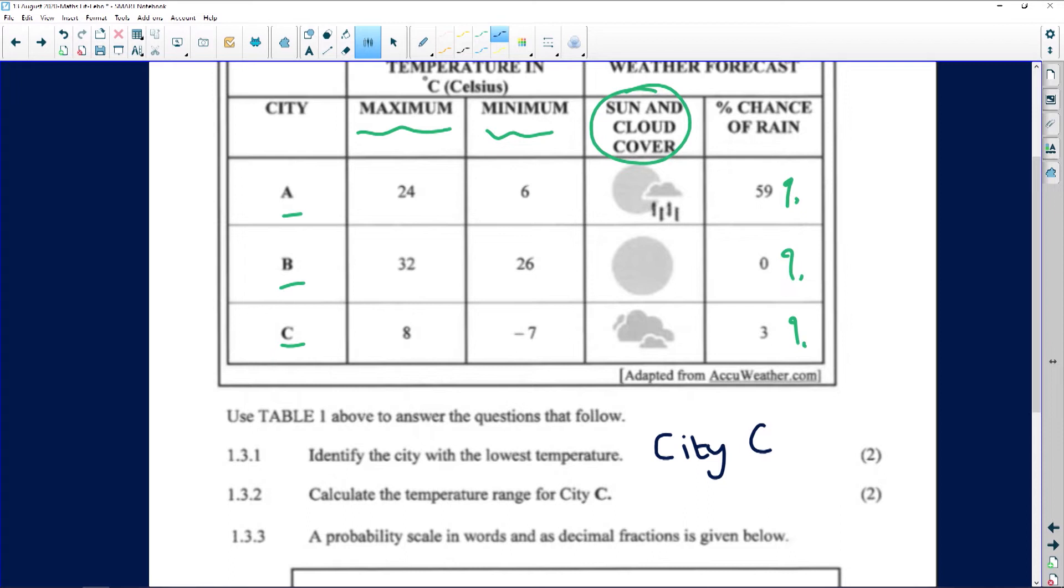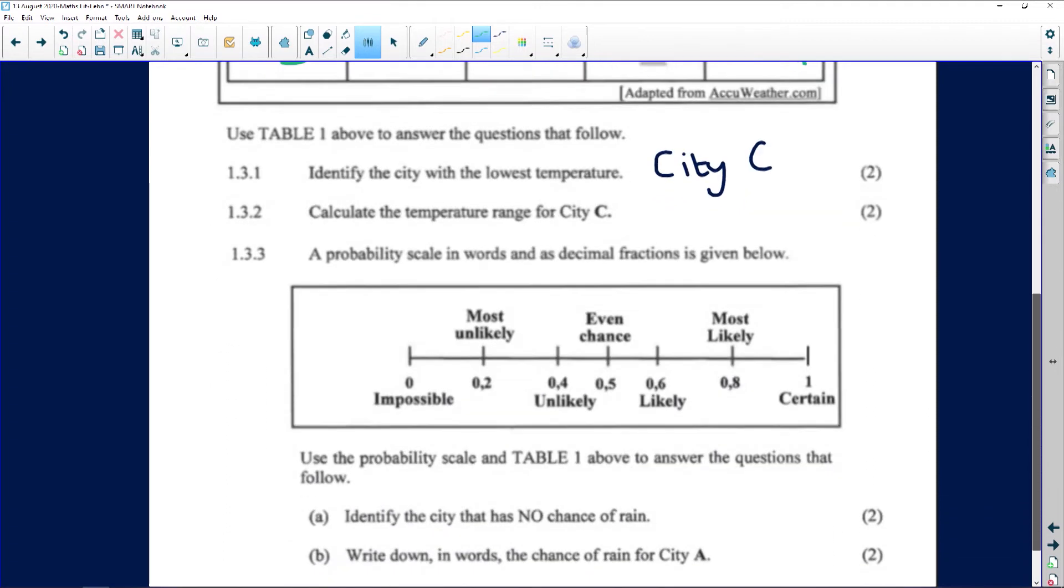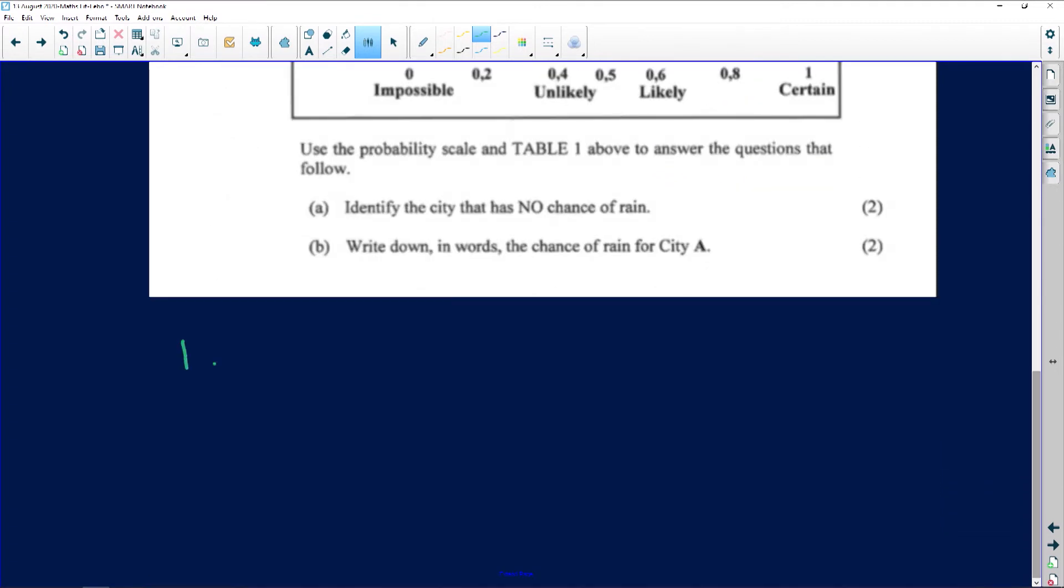Calculate the temperature range for City C. Okay, I don't have enough space for that. Range is maximum minus minimum and we know that from data handling. Let's go and calculate that. So 1.3.1 we said was City C, and then 1.3.2 is asking us for the range.